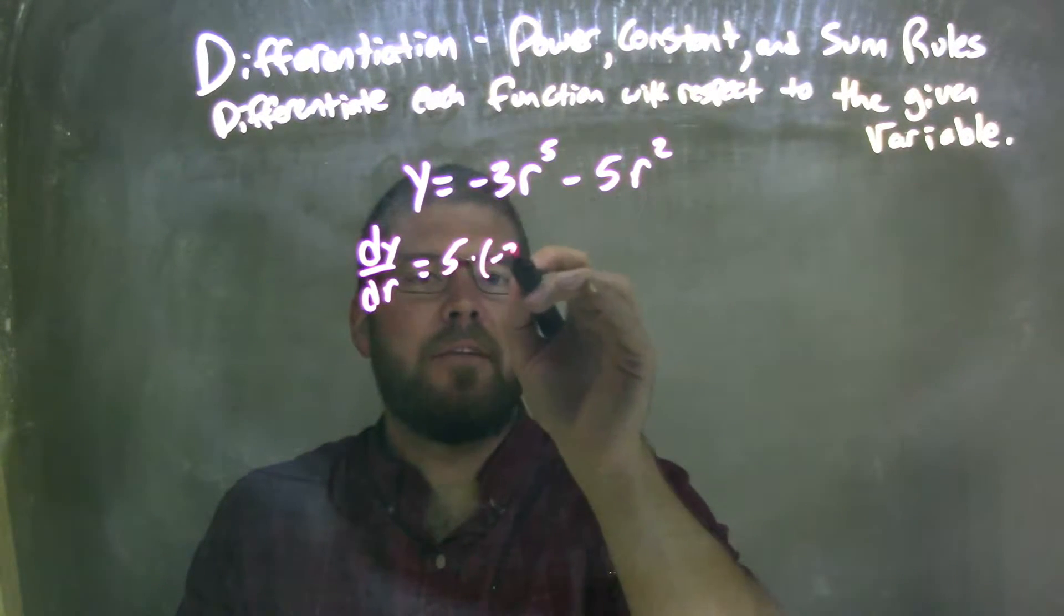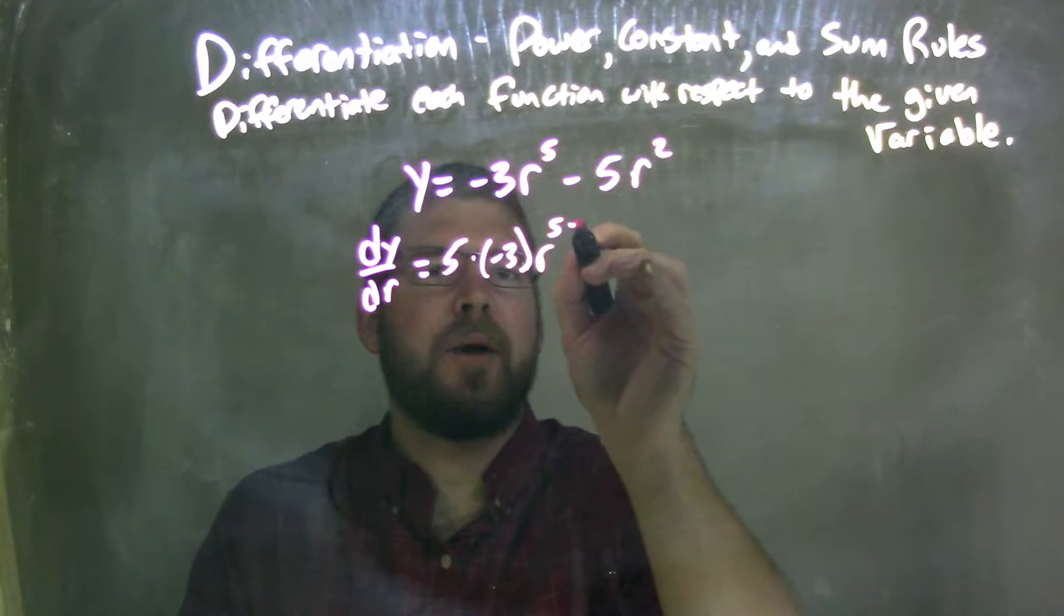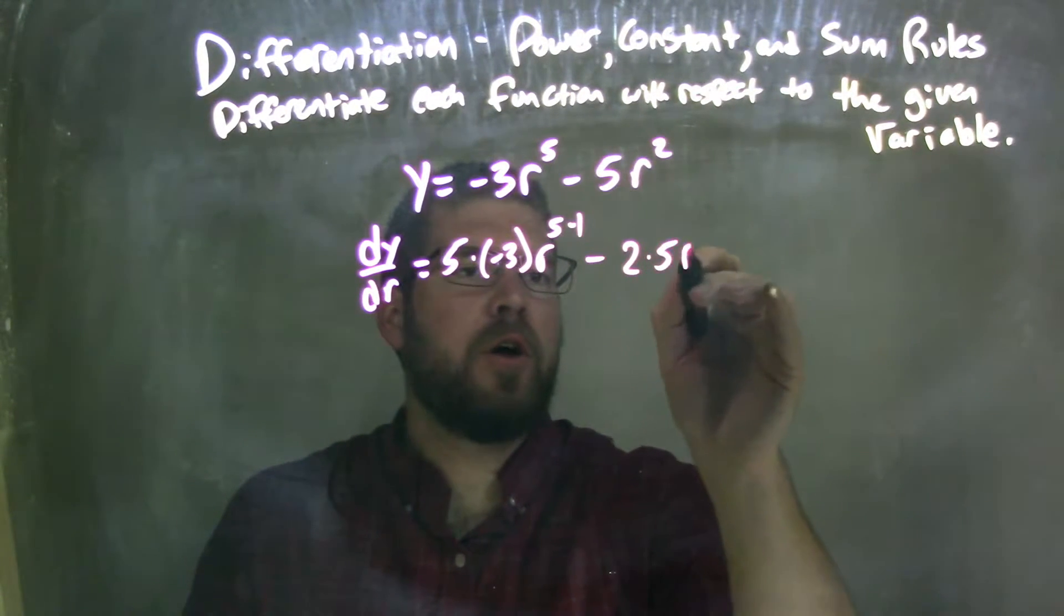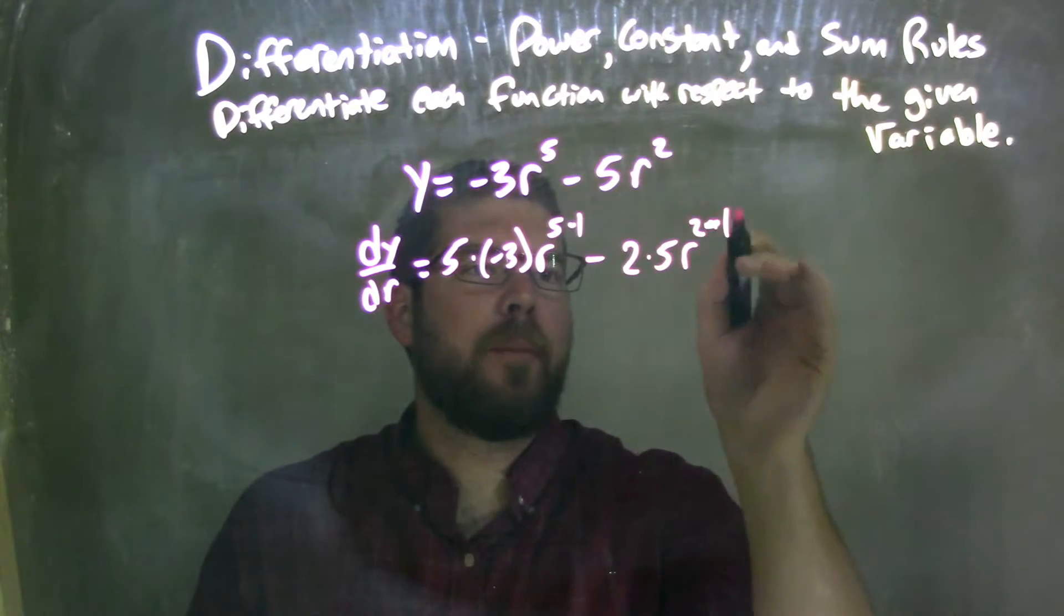5 times the negative 3r to the 5 minus 1 power, minus 2 comes out front, 2 times 5r to the 2 minus 1 power.